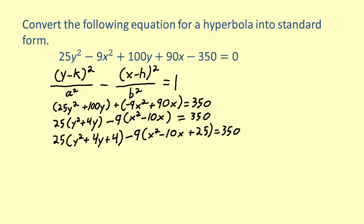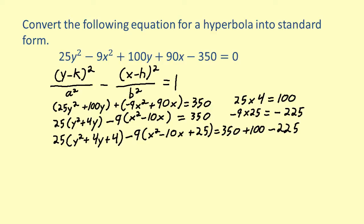In the first term, 25 times 4 equals 100, so add 100 on the right side. Next, since negative 9 times 25 equals negative 225, add negative 225 on the right side. Rewriting the trinomials as perfect squares and simplifying the right side gives 25 times the quantity y plus 2 squared minus 9 times the quantity x minus 5 squared equals 225.